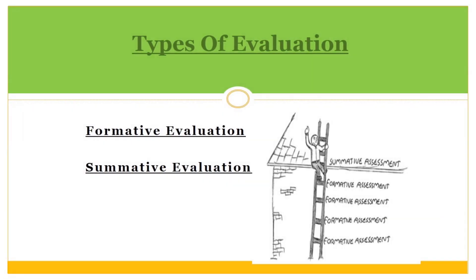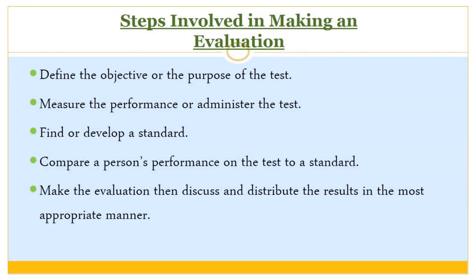Types of Evaluation: Formative Evaluation and Summative Evaluation. Steps involved in making an evaluation: define the objective or the purpose of the test; measure the performance or administer the test; find or develop a standard; compare a person's performance on the test to a standard; make the evaluation; then discuss and distribute the results in the most appropriate manner.